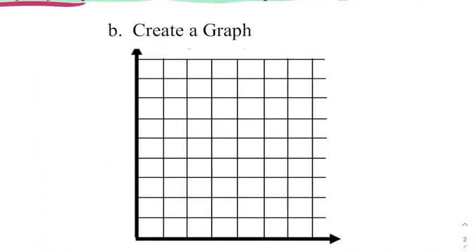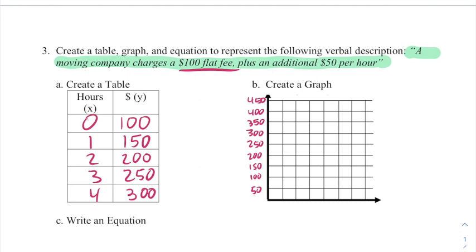Now for the graph, we're going to scale the graph to go by 50s. And we're going to copy these points over to the graph. So 0, 100 would be right here. Then 1, 150, 2, 200, 3, 250, and 4, 300.